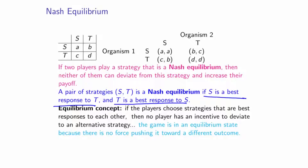We have been using the word equilibrium as an analogy for steady state. With differential equation models, equilibrium is associated with the state in which there is no change — it is the point at which the derivative equals zero, meaning there is no change. Here, the idea of equilibrium is summarized as: the game is at an equilibrium state because there is no force that would push the game towards a different outcome.